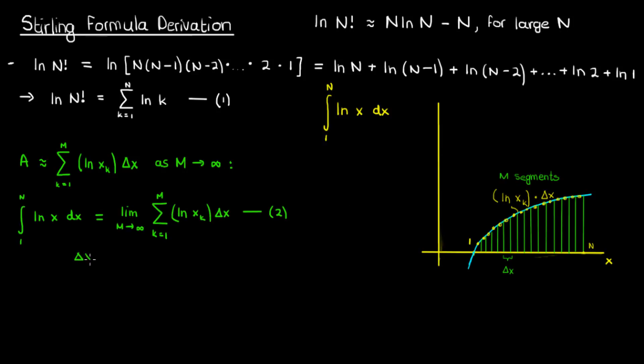You can write delta x, the length of each segment, as the total length of the interval, which is capital N minus 1, divided by the total number of segments, which is capital M.